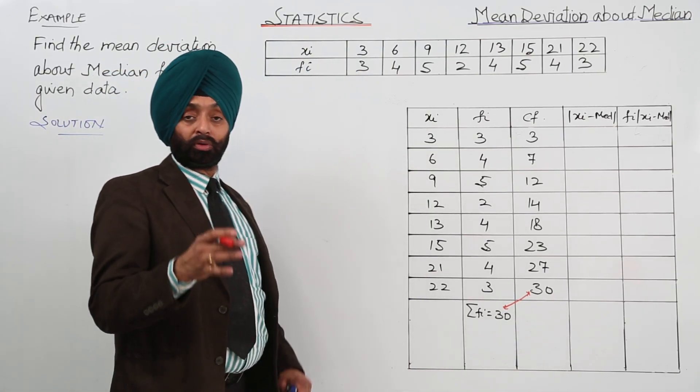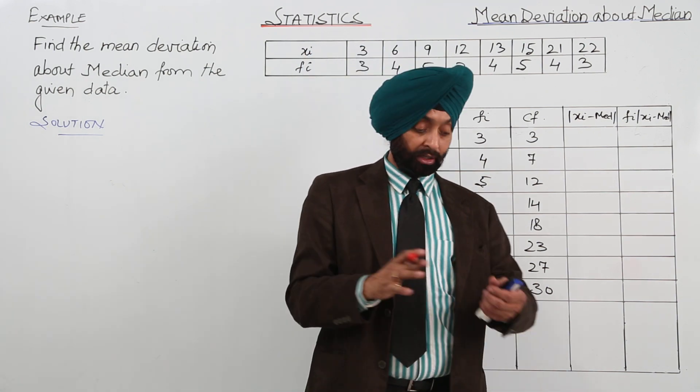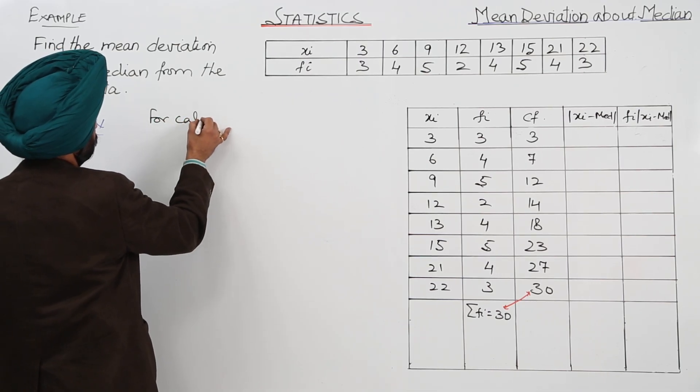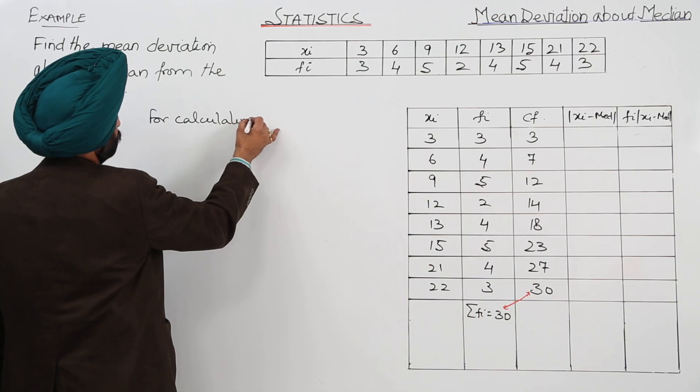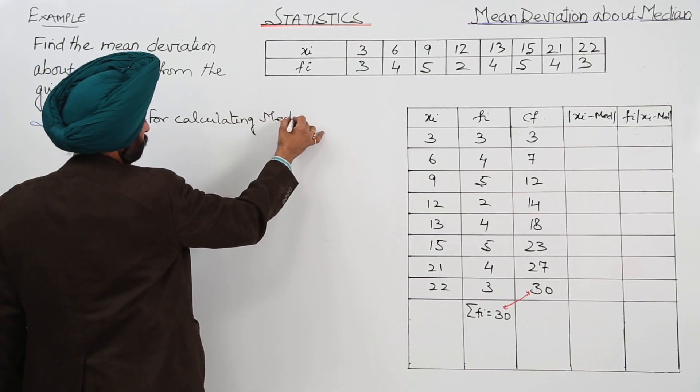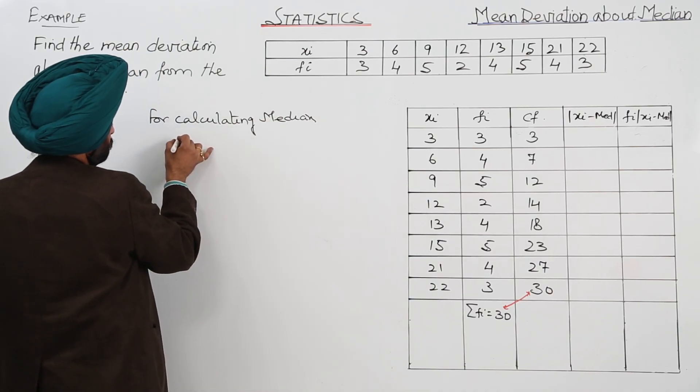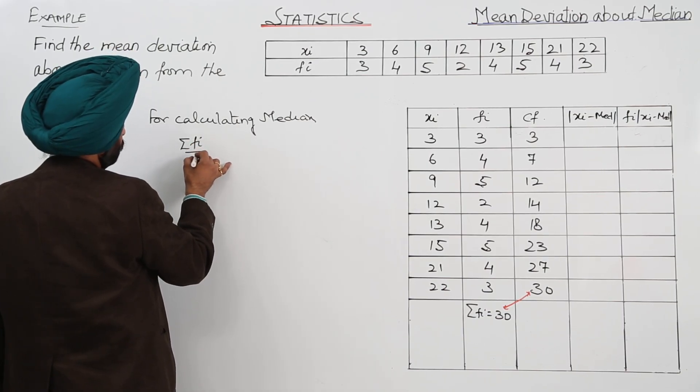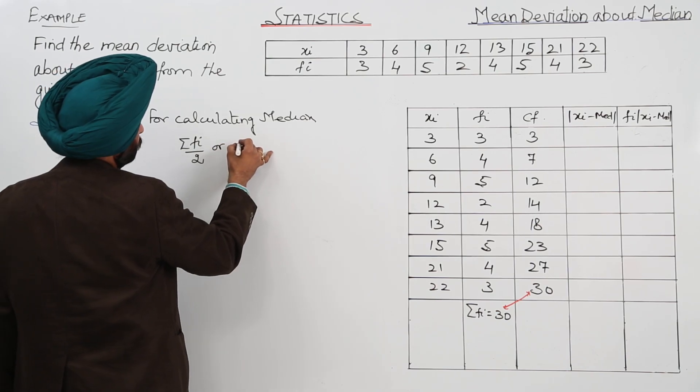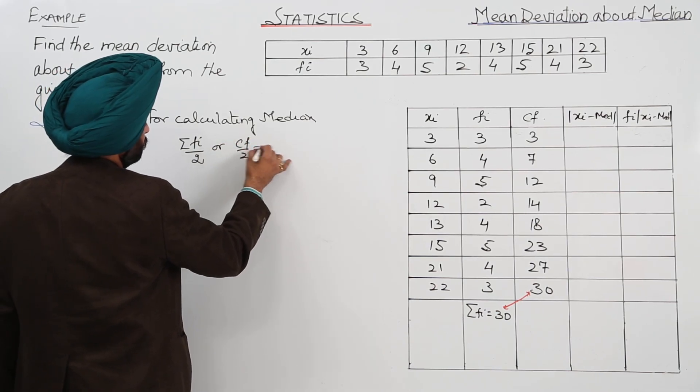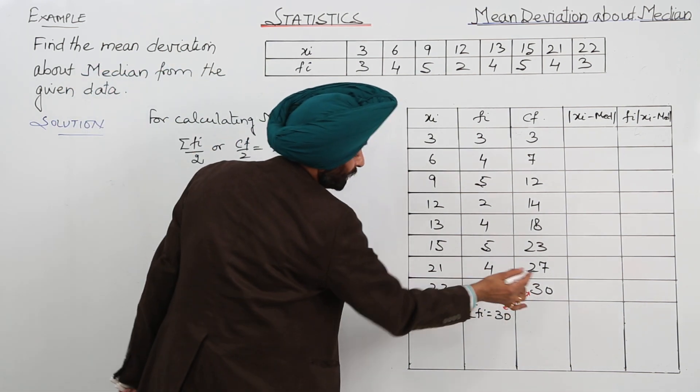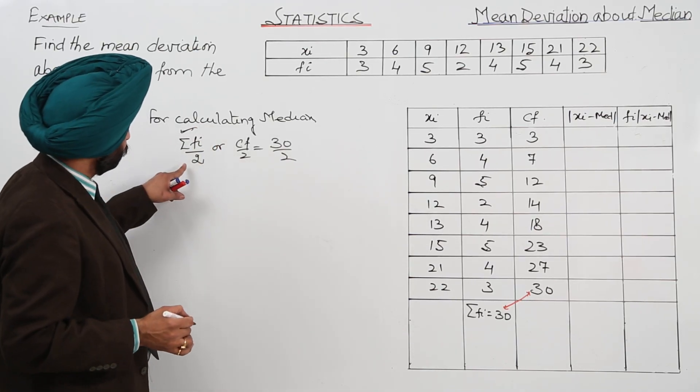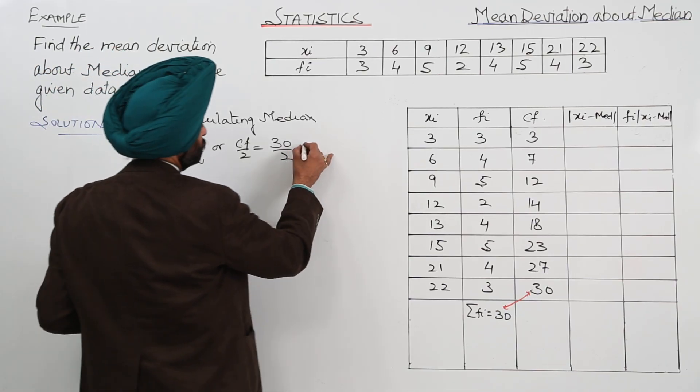Is it clear? Now the important thing is how to find the median. Now, for calculating median, summation for Fi upon 2 or CF upon 2. That is 30 upon 2. Now this CF means the last one. So better thing is to go for this part. Summation for Fi upon 2. That is 30 upon 2. Now this is 15.